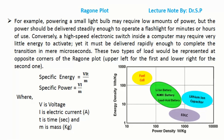Specific energy equals V·i·t divided by m, and specific power equals V·i divided by m. Where V is voltage, I is electric current in amperes, t is time in seconds, and m is mass in kilograms.